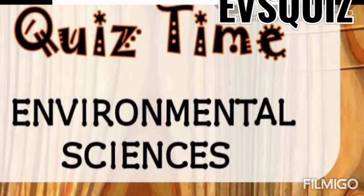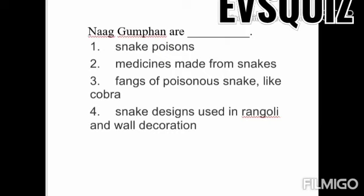The first question is: 'Non-compan are ___.' Option one: snake poisons. Option two: medicine made from snakes. Option three: fangs of poisonous snakes like cobra. Option four: snakes design used in rangoli and wall decorations. See the options very carefully students. Your time starts now.